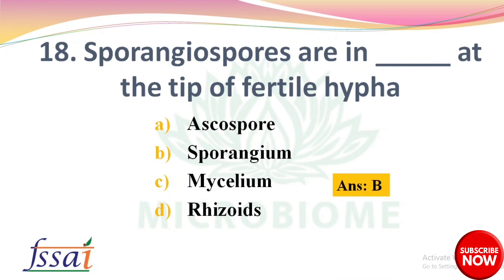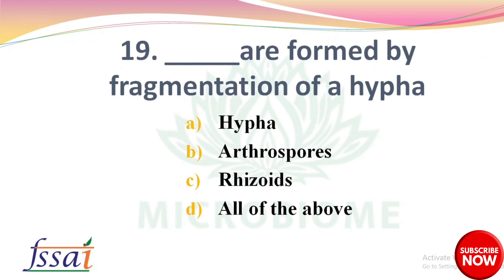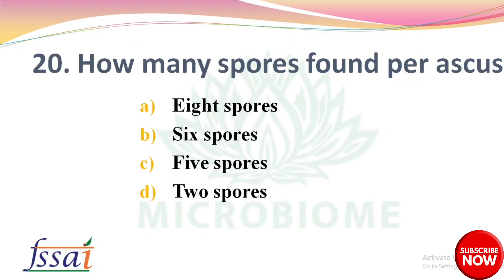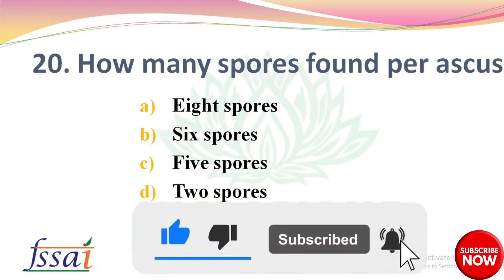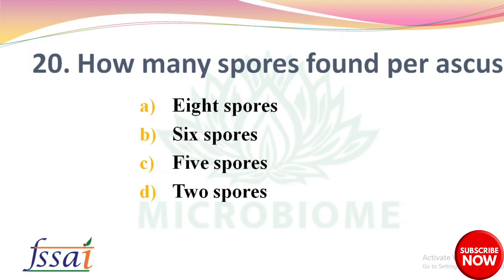Next: Spores are found in dash at the tip of fertile hypha — options: ascospore, sporangium, mycelium, rhizoids. The right answer is option B, sporangium. Next: Dash are formed by fragmentation of hyphae — options: hyphae, arthrospores, rhizoids, all of the above. The right answer is option B, arthrospores. Next: How many spores are found per ascus? — options: 8 spores, 6 spores, 5 spores, 2 spores. The right answer is option A, 8 spores.